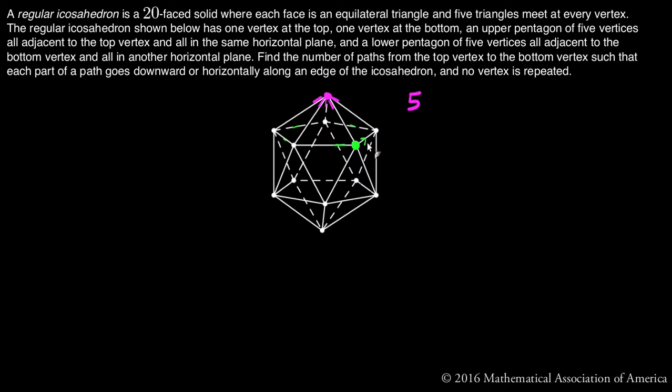Or I can go one, two, three, four and get to any one of these vertices going counterclockwise. So there are a total of one, two, three, four, five, six, seven, eight, nine possible paths I can take once I'm at one of these five vertices by going down.